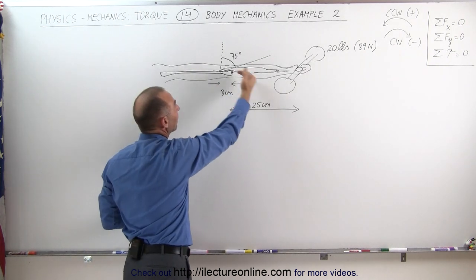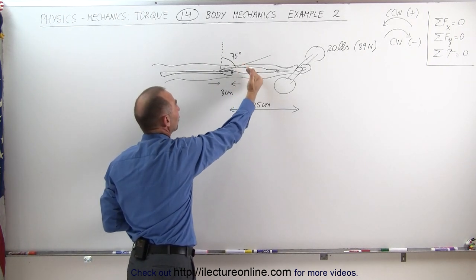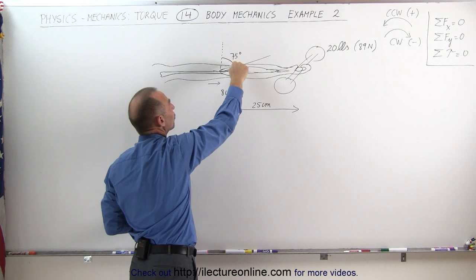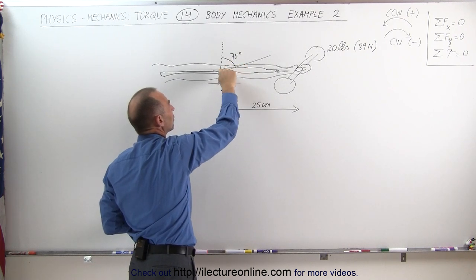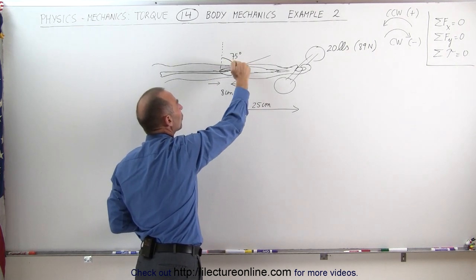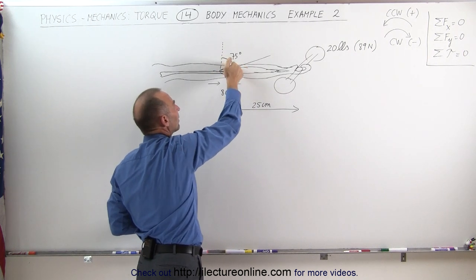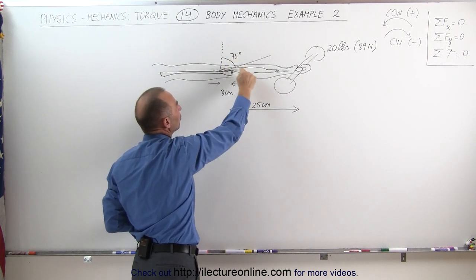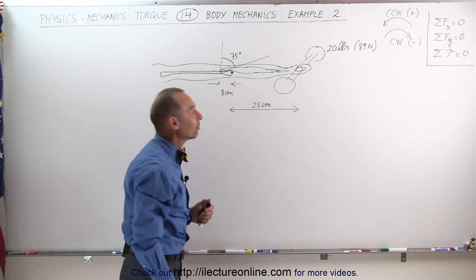Also notice the way the tendon and muscle are structured - they make an angle of 75 degrees to where the tendons are attached to the humerus. That's about 75 degrees from the vertical, which means it's a 15 degree angle with the horizontal.